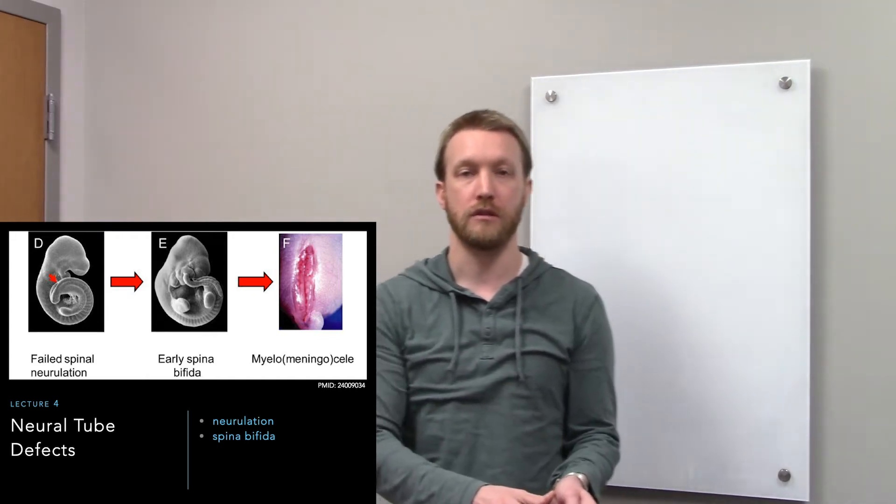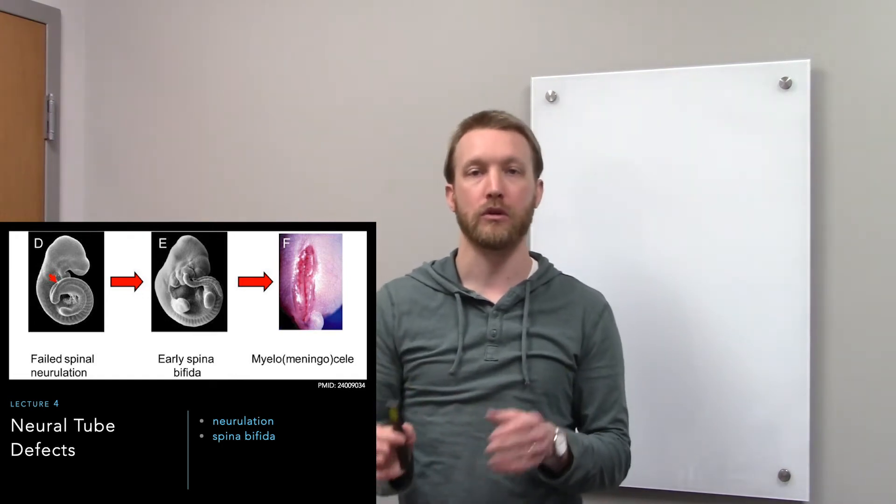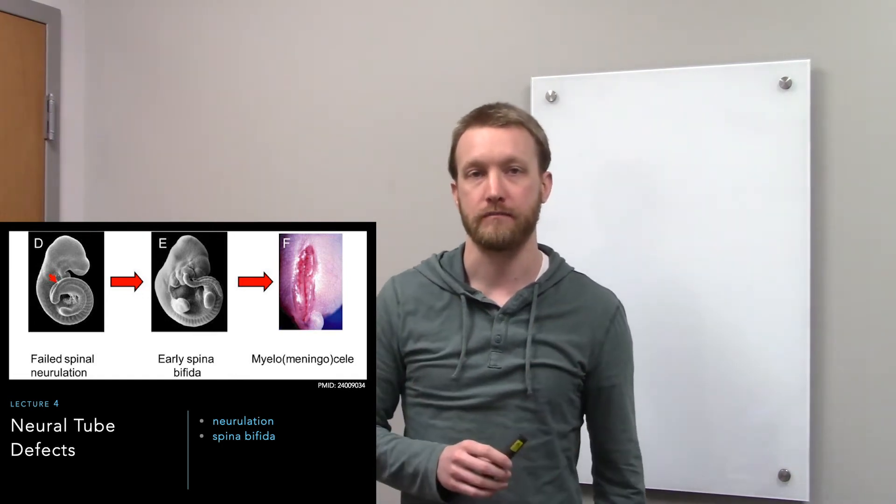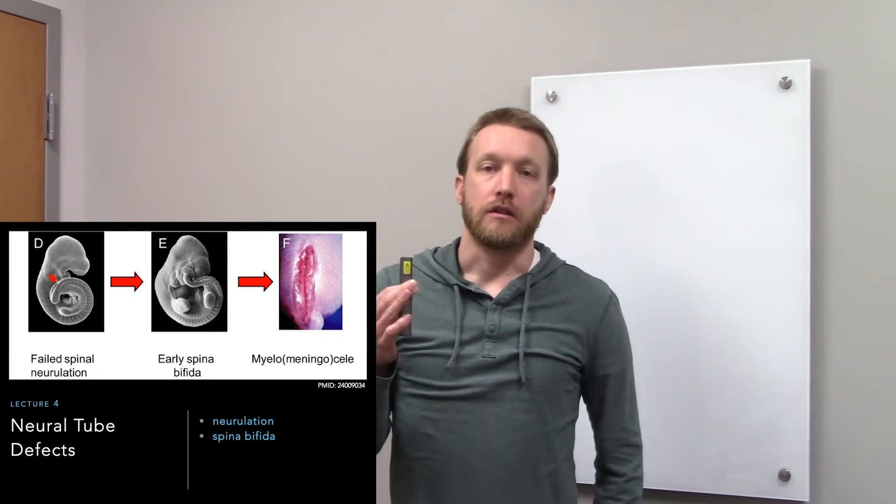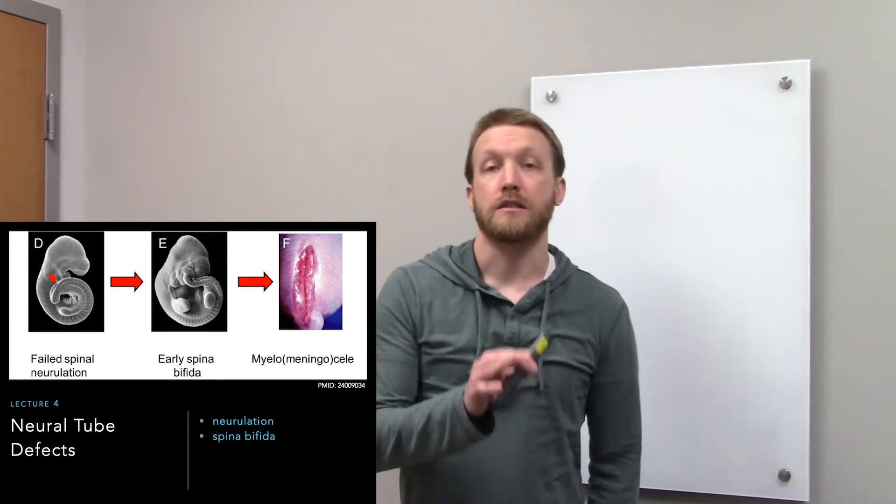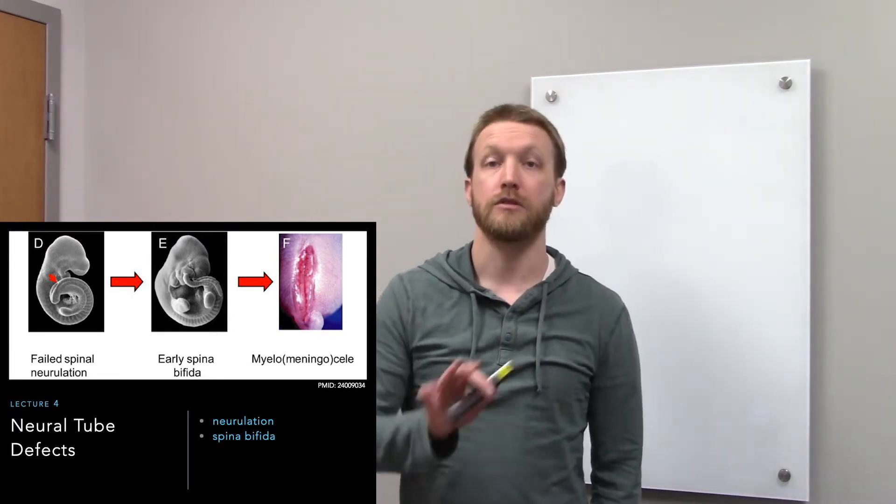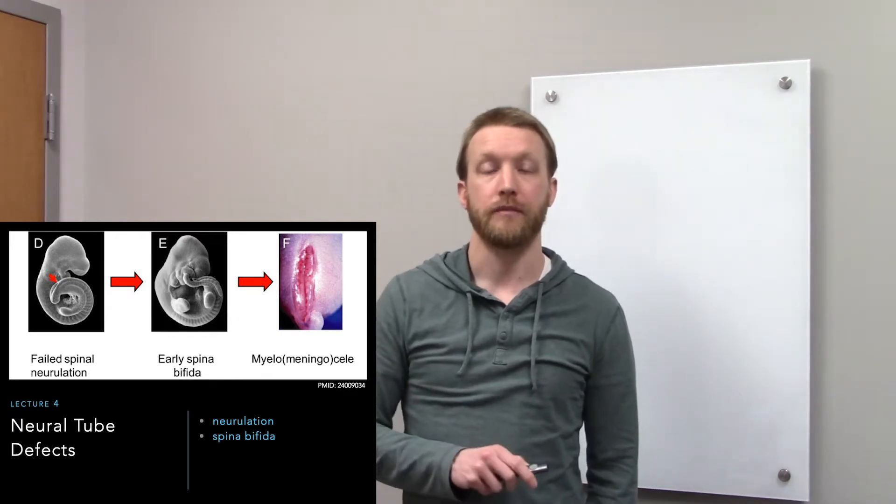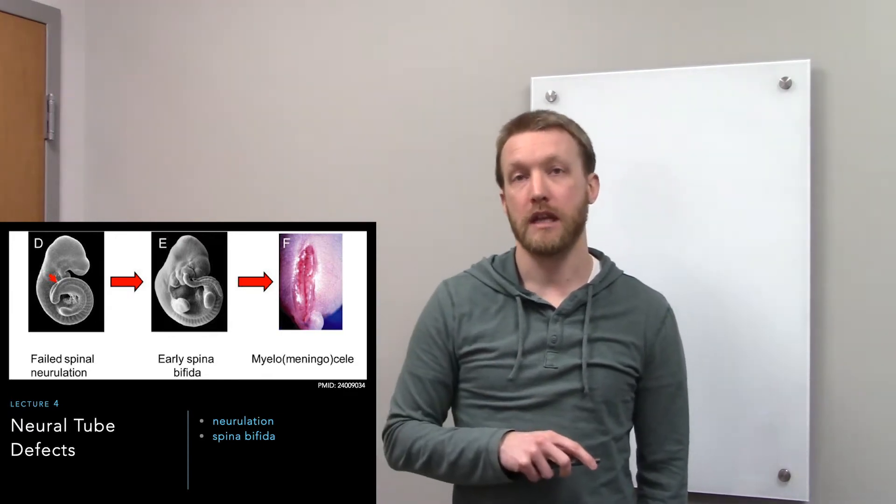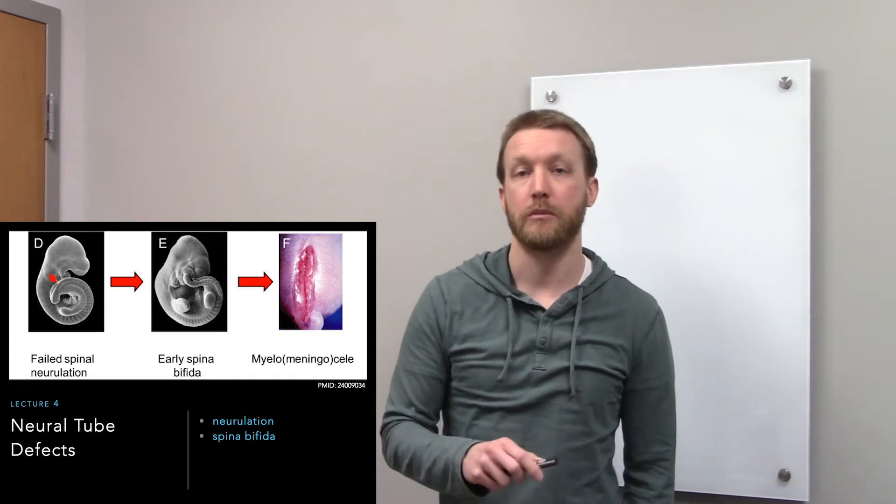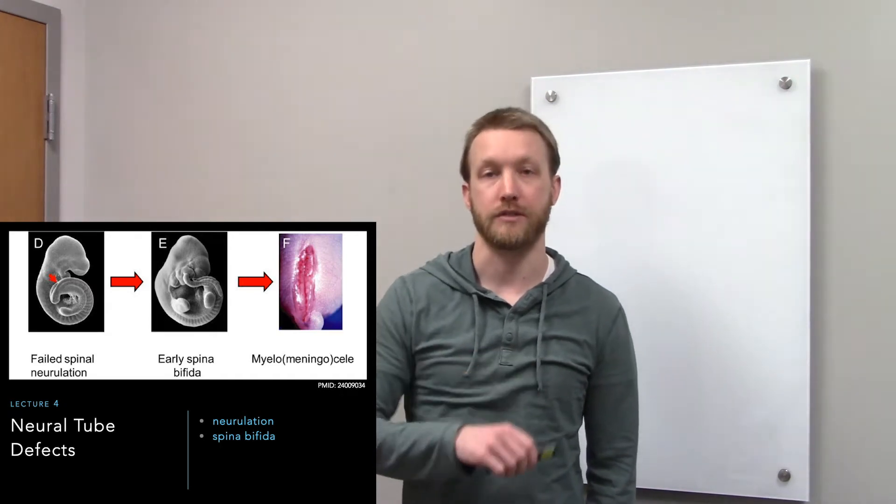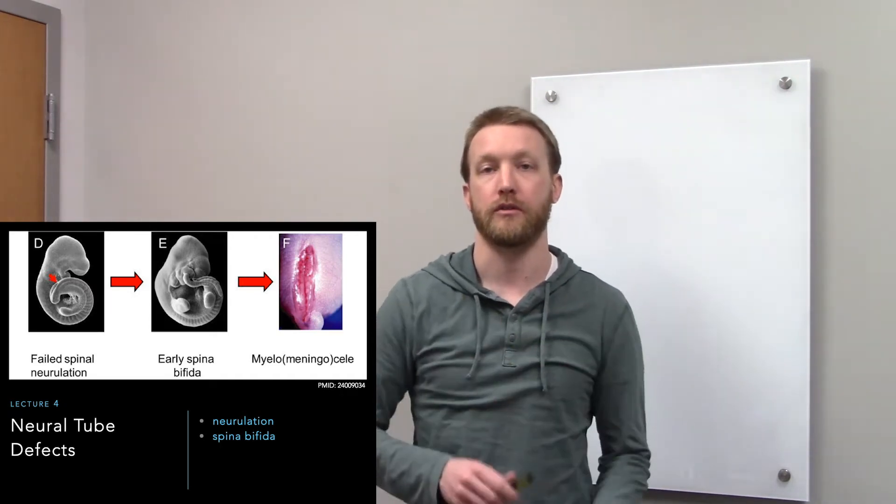After we cover neurulation and basic development of the spinal cord, we'll talk about spina bifida. There are other types of neural tube defects, but the outcomes are nowhere near as good. In this slide here, we can see an example of a more severe type of spina bifida called myelocele, an open neural tube defect.